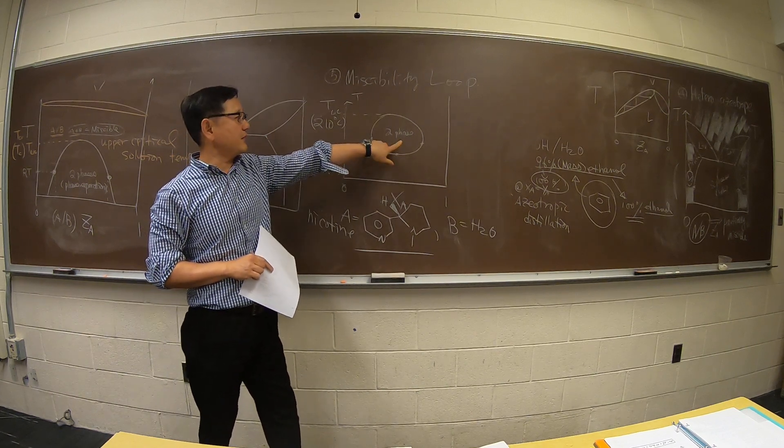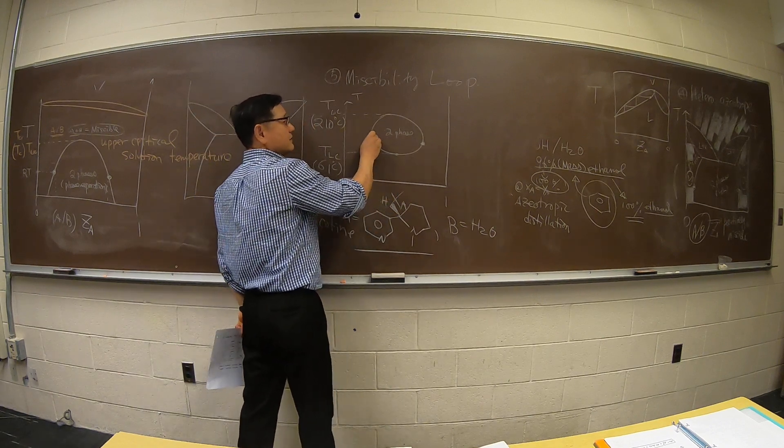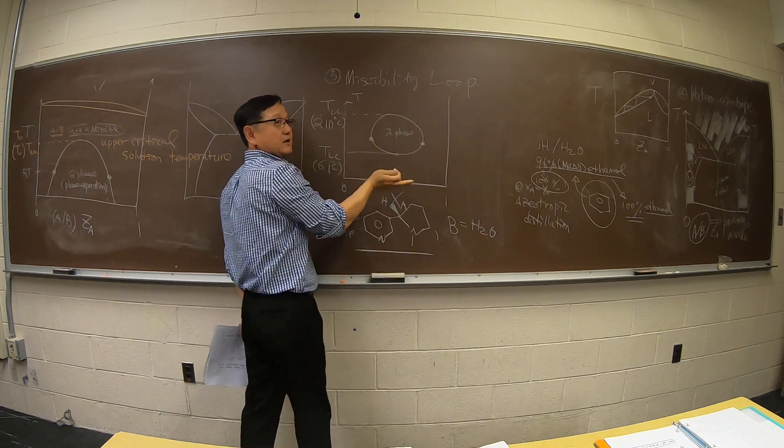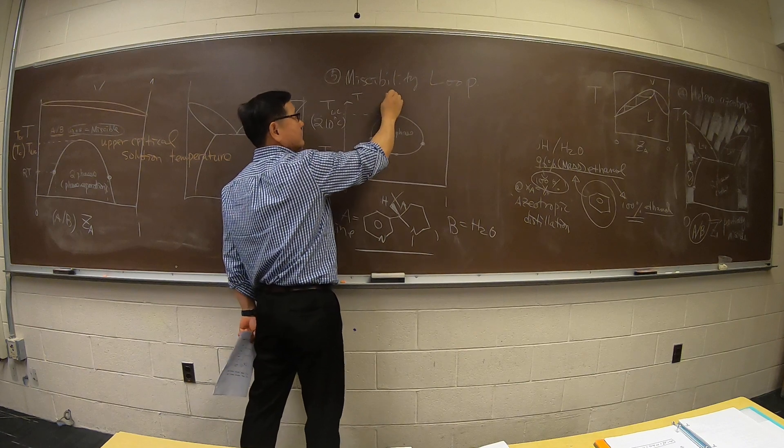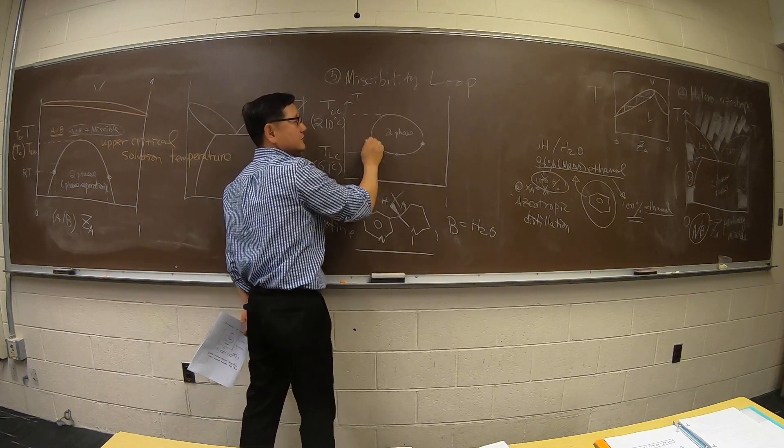You heat it up, you will have actually something that is nicotine rich and nicotine lean - two compositions. And if you keep on heating it to 210 degrees or higher, really high temperature, they became miscible again. So this is miscibility.